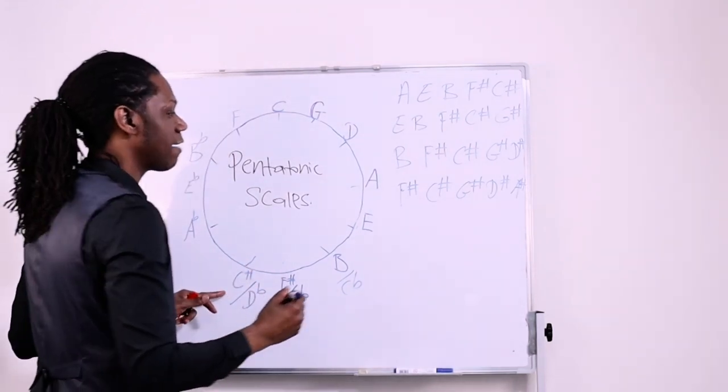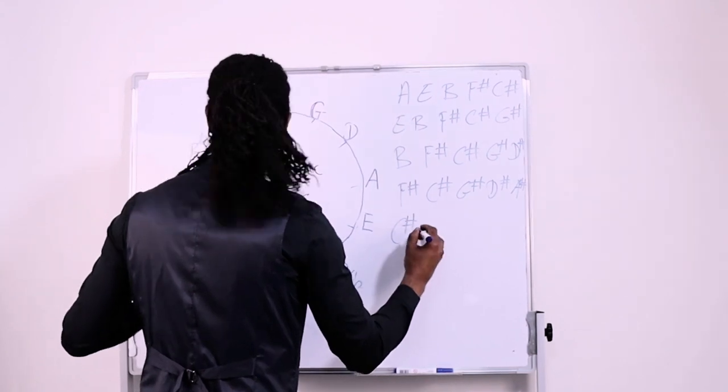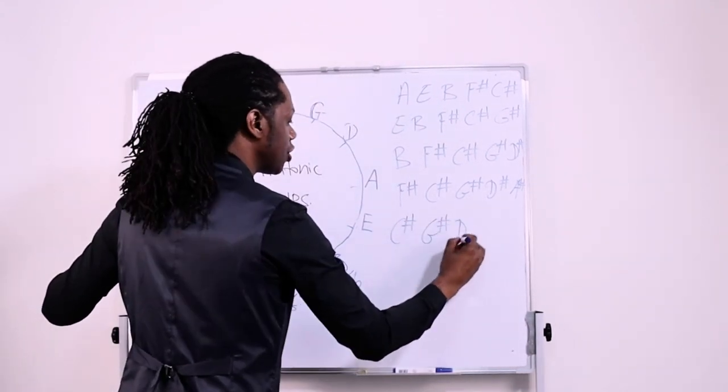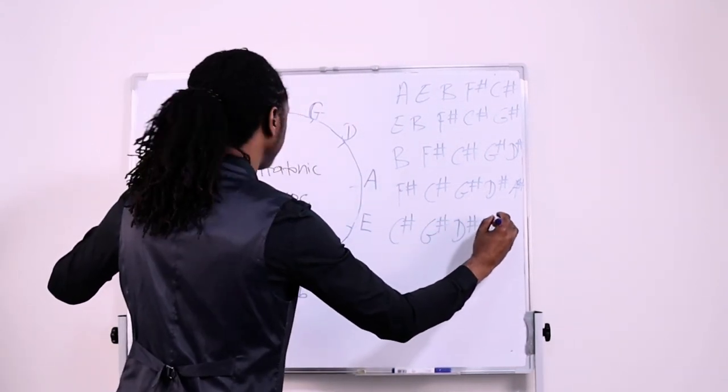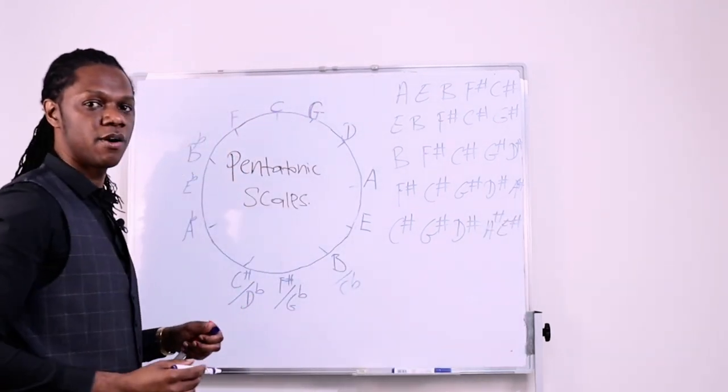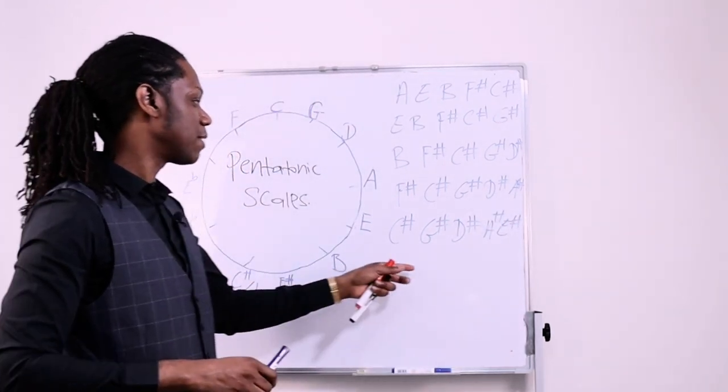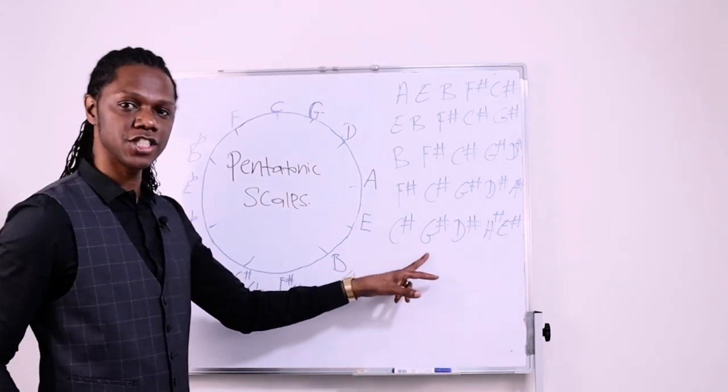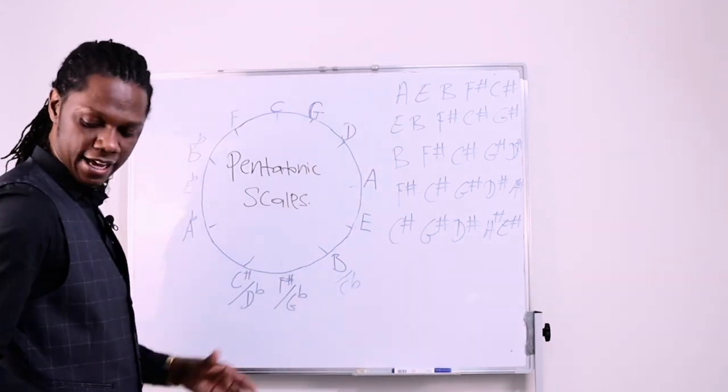And finally, on the sharp side, we have C sharp. So we have C sharp, we have G sharp, we have D sharp, we have A sharp, and we have E sharp. Okay? E sharp, harmonically, remember, we spoke about that in a previous video.